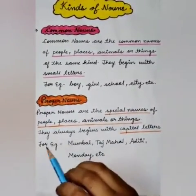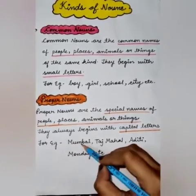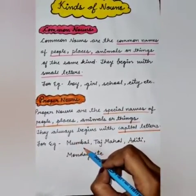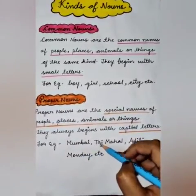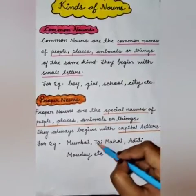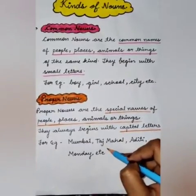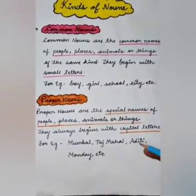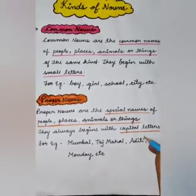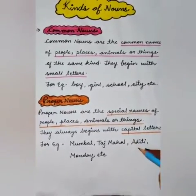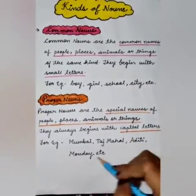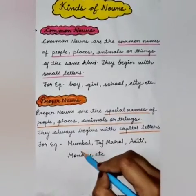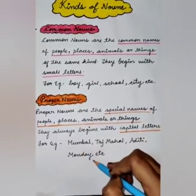For example, we have Mumbai — Mumbai is a particular name of a city. Taj Mahal — Taj Mahal is a particular name of a monument. Aditi — Aditi is a particular name of a girl. And Monday — Monday is a particular day.